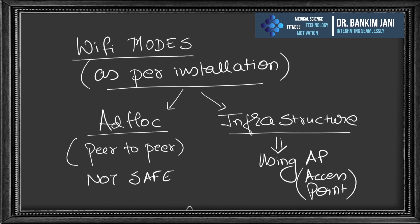In Wi-Fi modes, there are two based on installation: ad hoc mode (peer-to-peer, like Bluetooth file transfer) and infrastructure mode, where devices connect via an access point — the mode used in most homes.